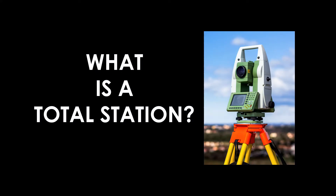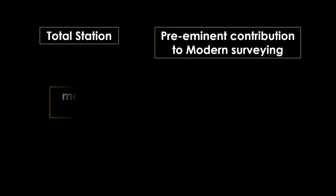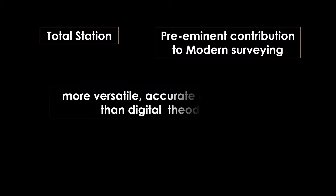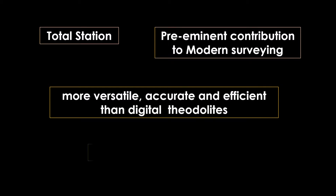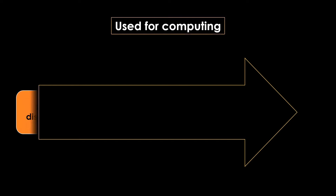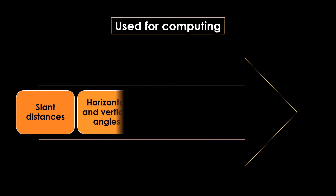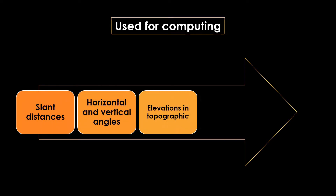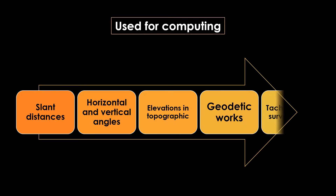What is a total station? Total station is a pre-eminent contribution to modern survey. Total stations are more versatile, accurate, and efficient than digital theodolites. Total stations are lightweight and compact. They are used for computing slant distances, horizontal and vertical angles, elevations in topographic and geodetic works, tachymetric surveys, etc.